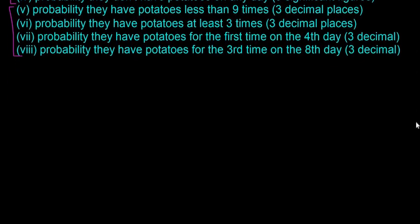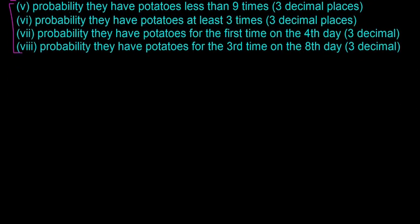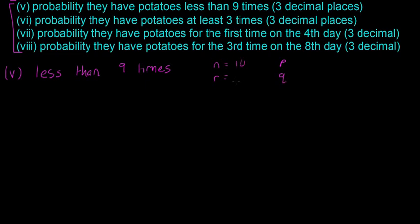The first question is part five: the probability that the Irish family eat potatoes less than nine times. This is where it gets difficult. What is n, r, p, and q? n is still 10, and p and q are still 0.7 and 0.3. The tricky part is that 'less than nine times' isn't just one number.